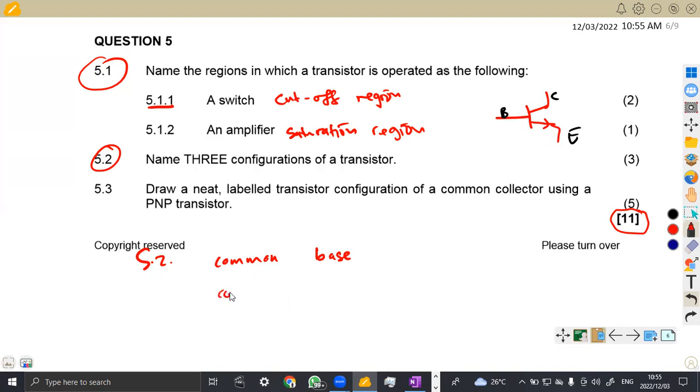So those are the ones that you're going to have, but just you have common. So you're going to have the common base. You can have the common collector. That's another configuration. We can have the common emitter. So that is what we actually have on these configurations, just like that three marks.